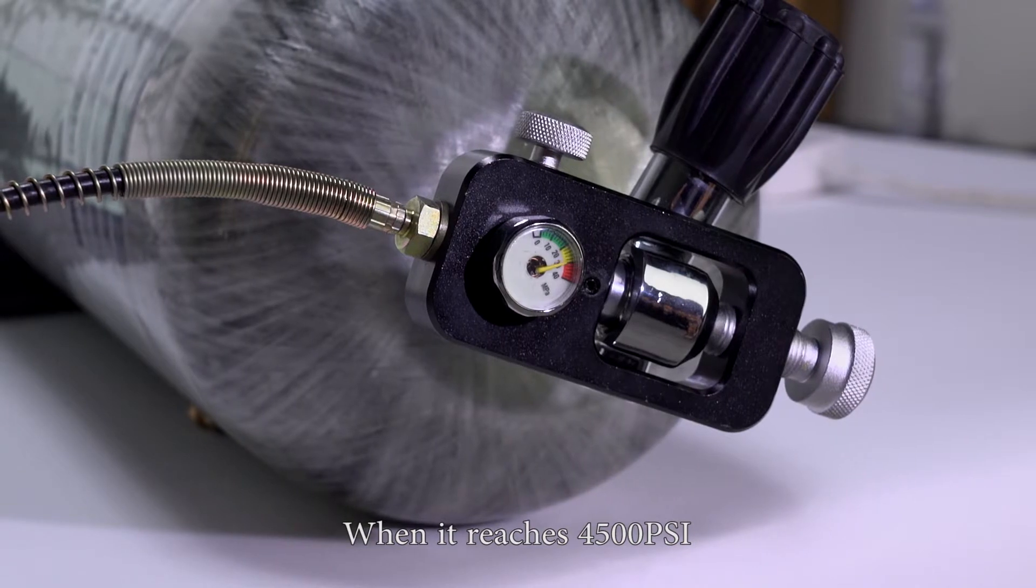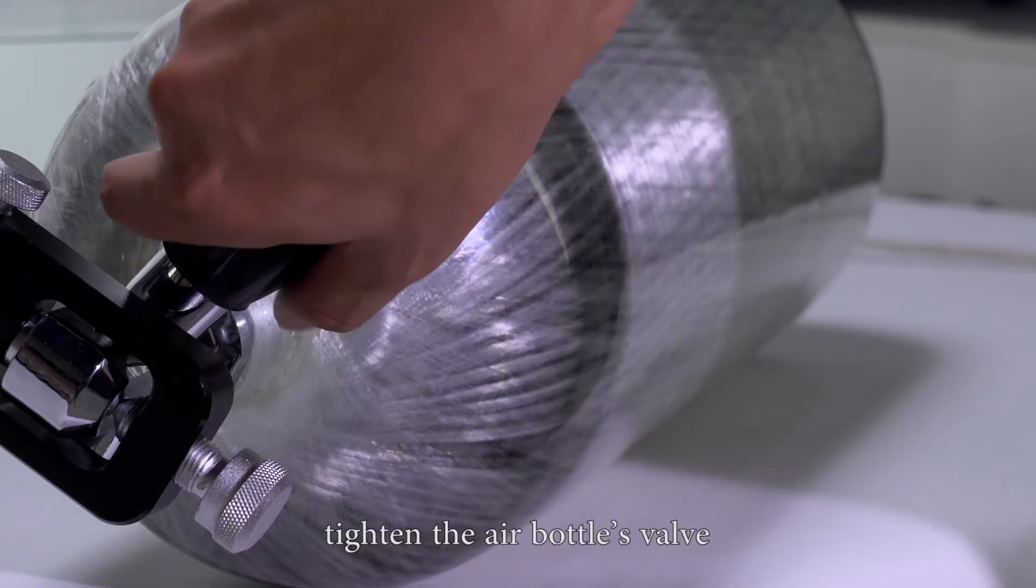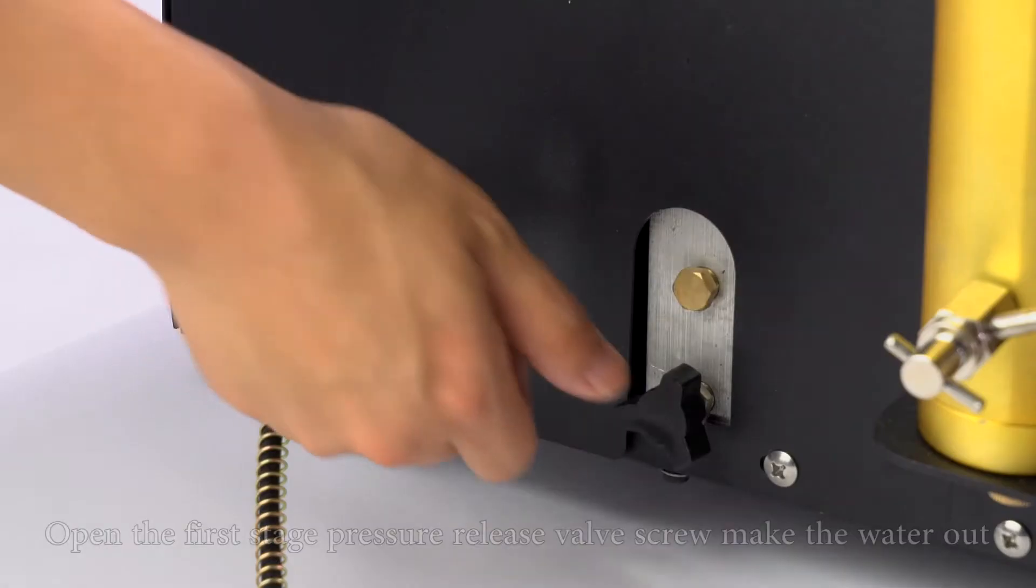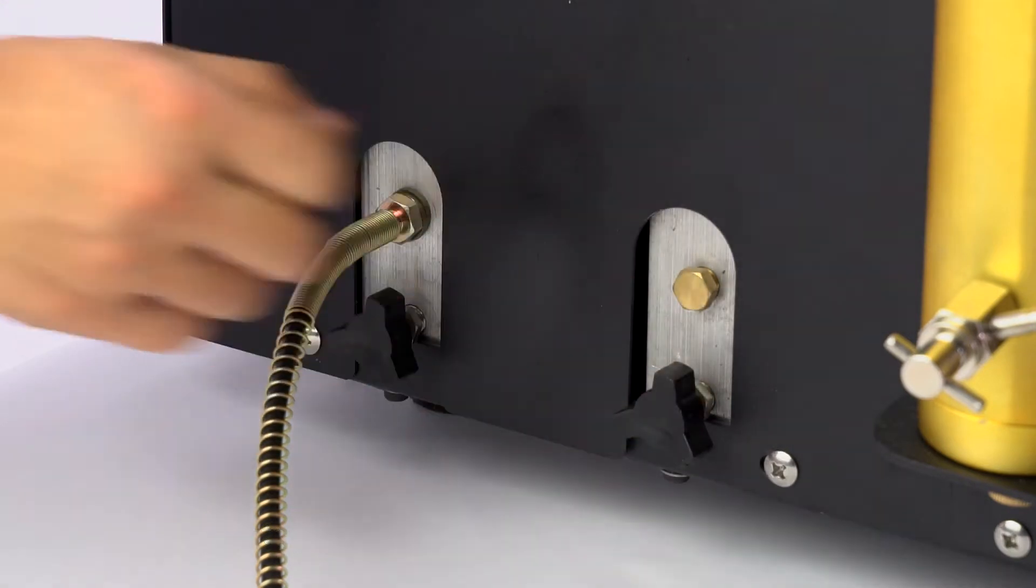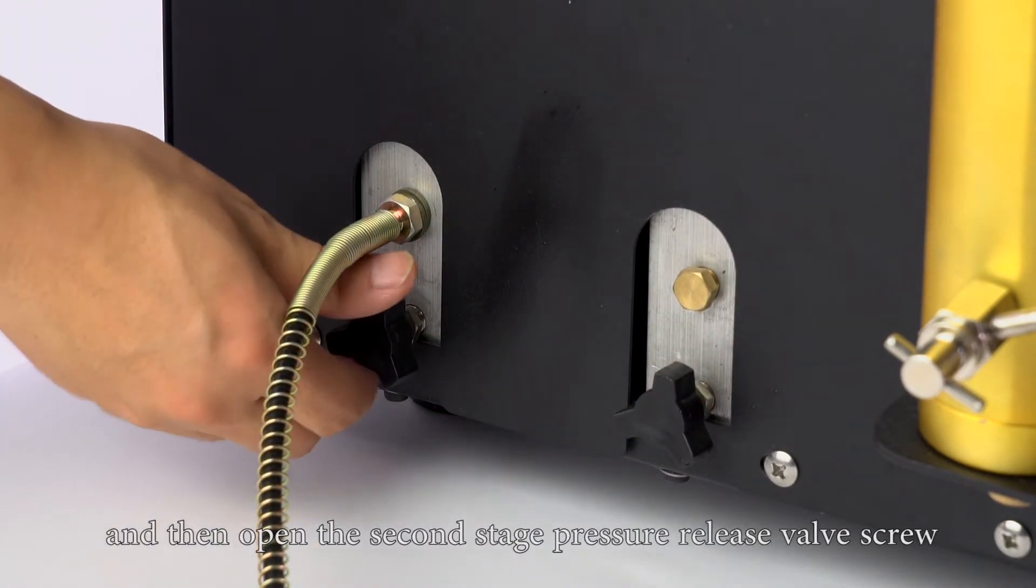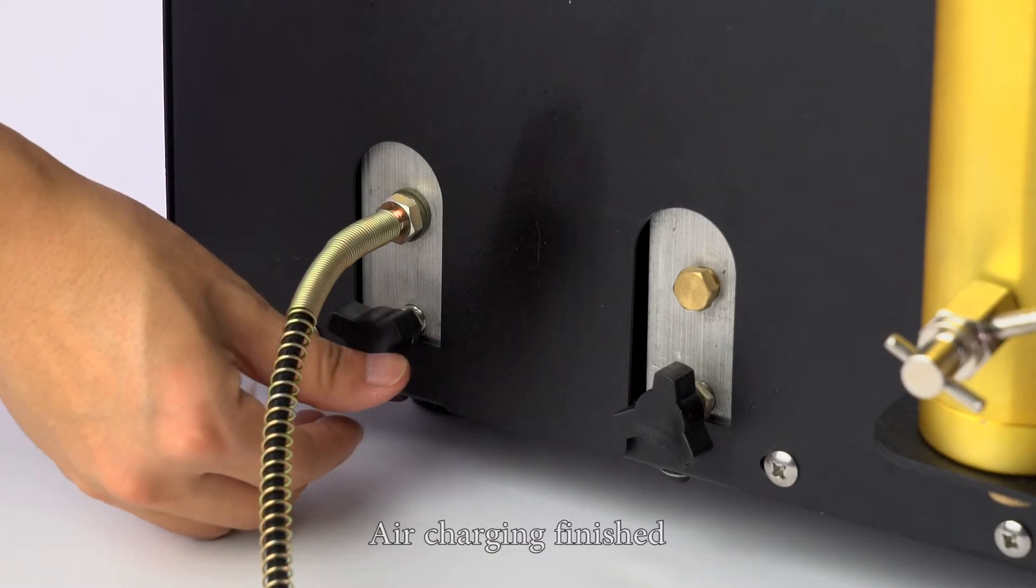When it reaches 4500 psi, turn off the switch again. Tighten the air bottle's valve. Open the first stage pressure release valve screw, make the water out, and then open the second stage pressure release valve screw to make the pressure out. Air charging finished.